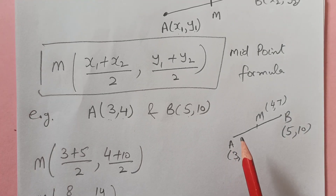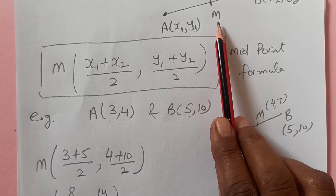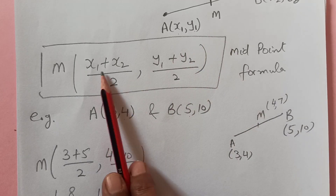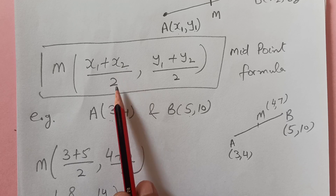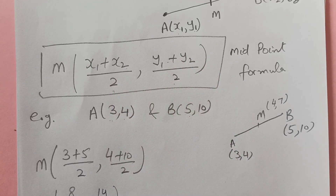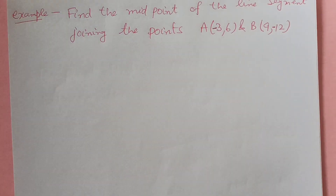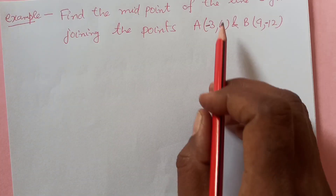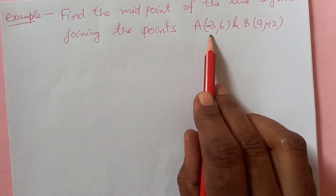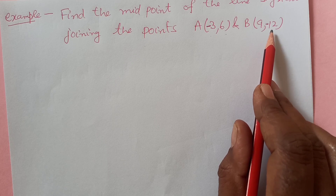To summarize how to find the coordinates of the midpoint: you just add the x-coordinates and divide by 2, add the y-coordinates and divide by 2. Let us take another example: find the midpoint of the line segment joining the points (-3, 6) and (9, -12).